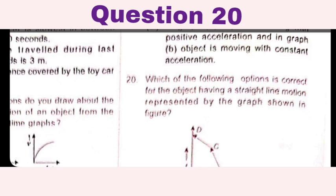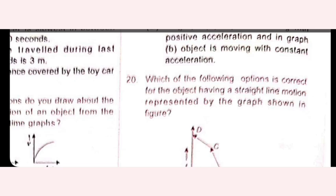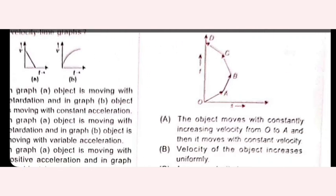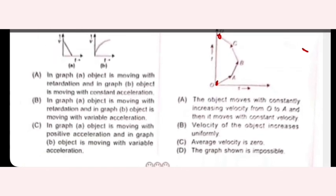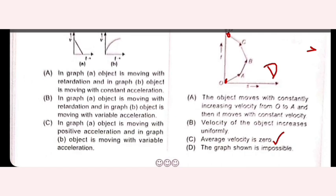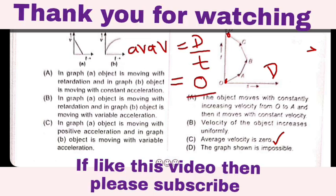For an object having straight-line motion as shown in the graph, the object moves with constantly increasing velocity from 0 to A then constant velocity — wrong, as both velocity and speed change. Velocity increases uniformly — not correct. Average velocity is 0 because the origin point and last point are the same, meaning displacement is 0, so average velocity = displacement / time = 0. Option C is the right answer.